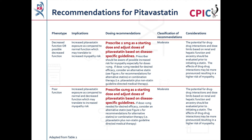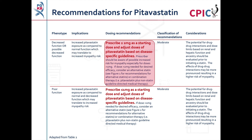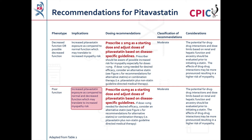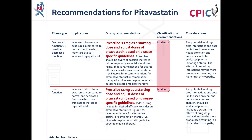These are the CPIC recommendations specifically for pitavastatin. Patients with decreased or possible decreased function may have an increased risk of myopathy; these patients should be prescribed a starting dose of no more than 2mg. Patients with poor function should be prescribed a starting dose of no more than 1mg. These are moderate recommendations.